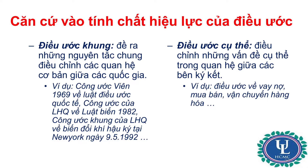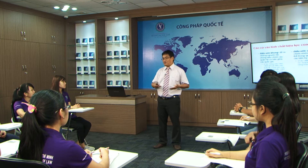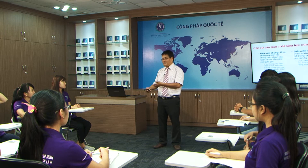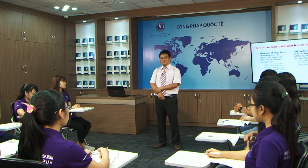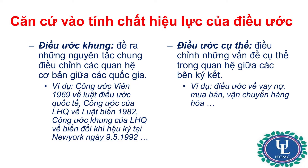Về tiêu chí thứ hai, căn cứ vào tính chất hiệu lực của điều ước, có thể chia thành điều ước quốc tế khung và điều ước cụ thể. Điều ước quốc tế khung là những điều ước đề ra những nguyên tắc chung để điều chỉnh các vấn đề cơ bản trong quan hệ giữa các quốc gia. Dựa trên cơ sở đó, các quốc gia sẽ tiếp tục ký kết các điều ước cụ thể hoặc chuyên biệt. Ví dụ tiêu biểu: Công ước Vienna năm 1969 về luật điều ước quốc tế, Công ước Luật Biển năm 1982, và Công ước Khung của Liên Hợp Quốc về Biến đổi Khí hậu ký tại New York năm 1992.